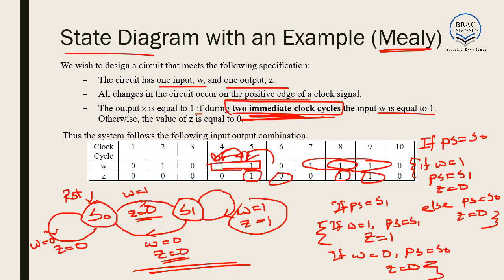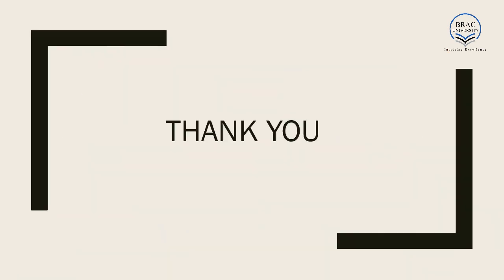We can very easily convert a state diagram into code or a circuit. In case of Mealy or Moore machines, it is very important to draw the state diagram correctly. Whether the machine is Mealy or Moore depends on the problem statement — the language of the problem statement is very important. In the next lecture, we will look at more examples of state diagrams. Thank you.